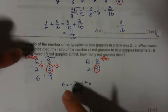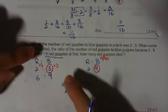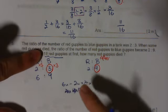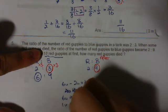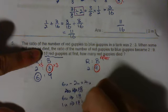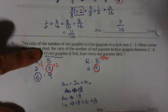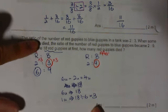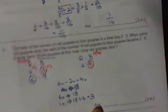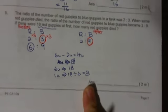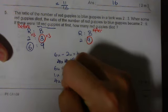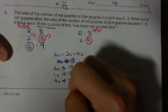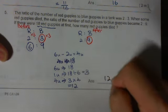Last part. How many units is the 18 red guppies? We are using it before. So 6u represented by 18. 1u is 18 divided by 6 equals 3. 1 unit is 3. So, what's the next step? 4u because I am trying to find how many died. 3 times 4 equals 12. 12 guppies died.